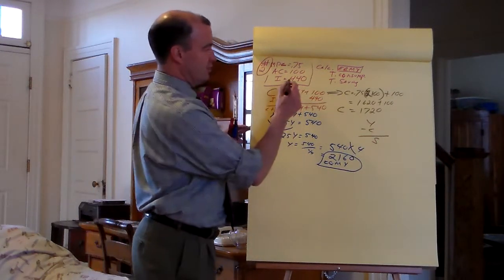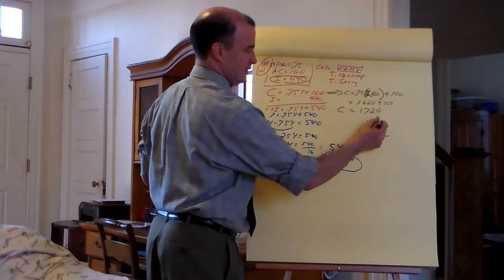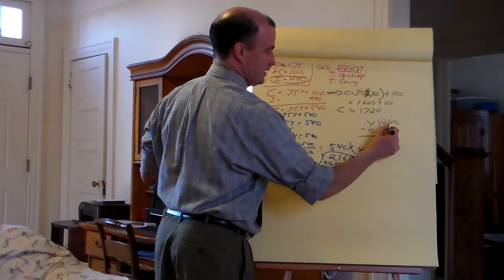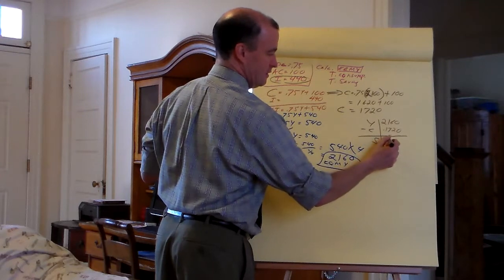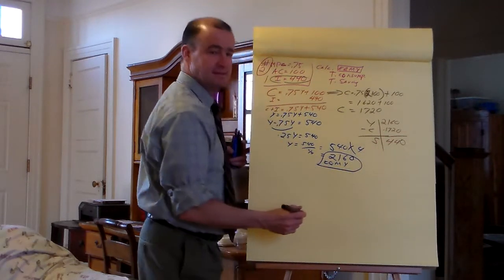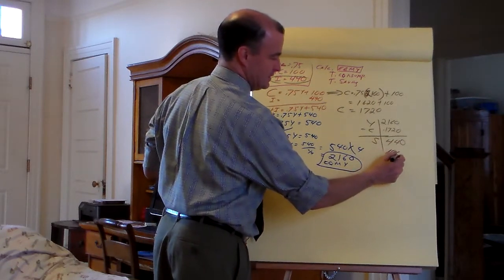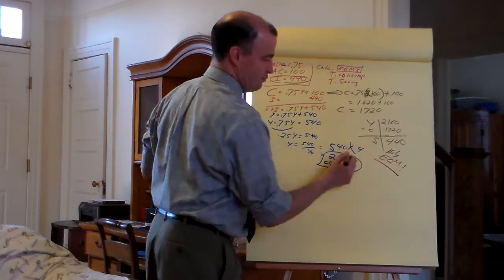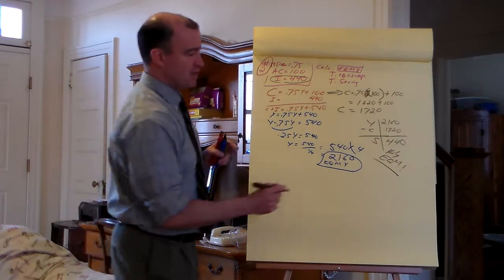We'll know it's right if Y minus C — saving — equals the 440 investment we began with. Let's see: 2160 minus 1720 is 440. Holy equilibrium, Batman! S equals I. Check.